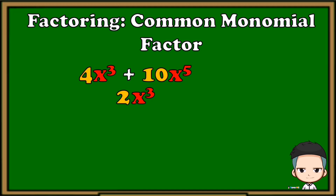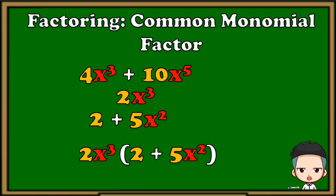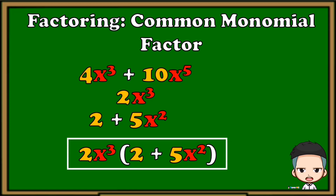Next we need to divide each term by our common monomial factor. Starting with the first term: 4 divided by 2 is 2, then x cubed divided by x cubed is 1 — we can just cancel out those two x cubes. Copy the operation, then repeat the process on the second term: 10 divided by 2 is 5, and x raised to 5 divided by x cubed is x squared. Arrange the answers: copy the common monomial factor and multiply it to the quantity of the quotients. The factored form of 4x cubed plus 10x raised to 5 is 2x cubed times the quantity of 2 plus 5x squared.